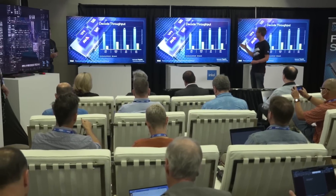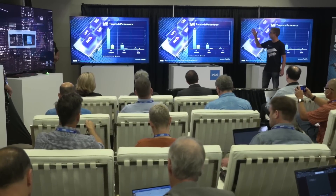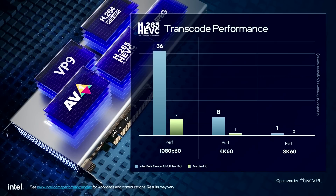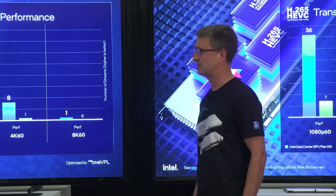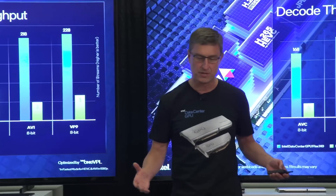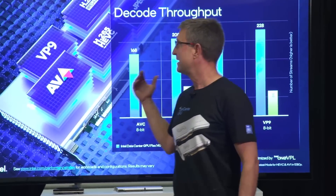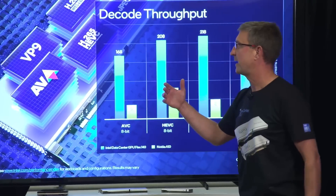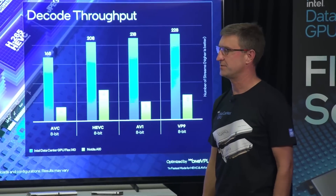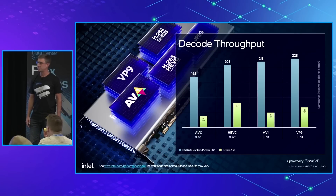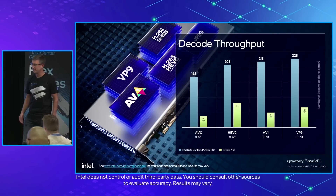To summarize what you saw: the 1080p was transcoded from 10 megabits per second down to 3 megabits per second; the 4K was from 20 to 15; and we showed one example at 8K. It's not all about transcode — decode is important too. You can see multiple different formats here, achieving four to even five times better density versus the competition for video processing.